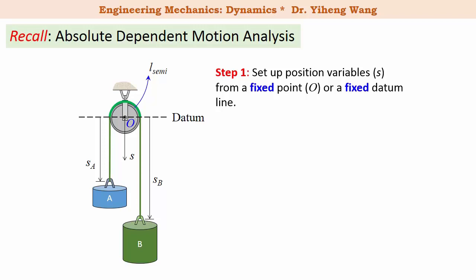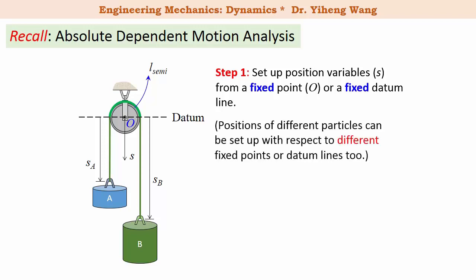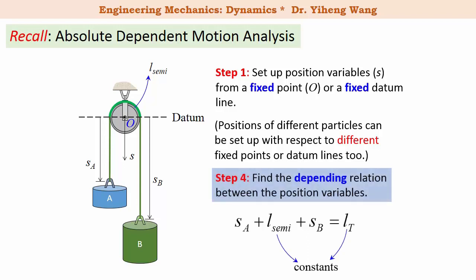In some examples we also learned that the positions can be set up with respect to different fixed points or datum lines. Then we need to find the depending relation between the position variables and from there we can determine the kinematic variables such as velocity and acceleration of one particle from the other.